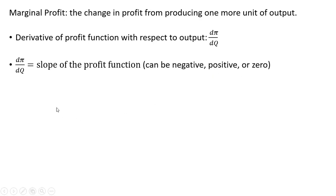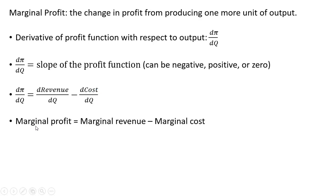Marginal profit is marginal revenue minus marginal cost, where the derivative of the revenue function with respect to output is marginal revenue, and the derivative of the cost function with respect to output is marginal cost. For example, if we produce one more unit of output and revenue goes up by ten dollars while cost goes up by eight dollars, that difference of two dollars represents marginal profit.